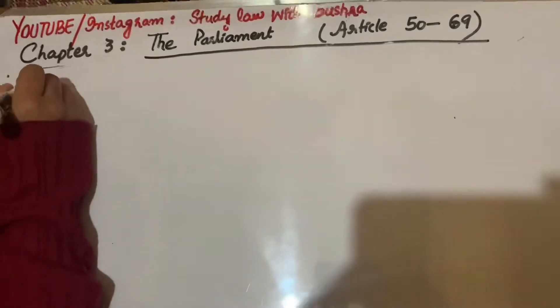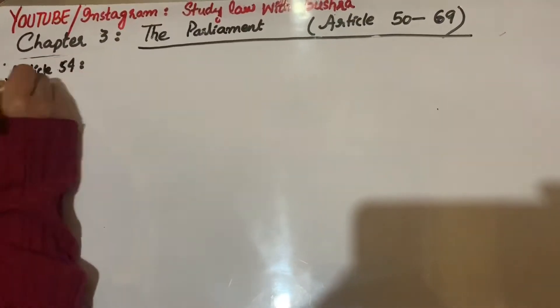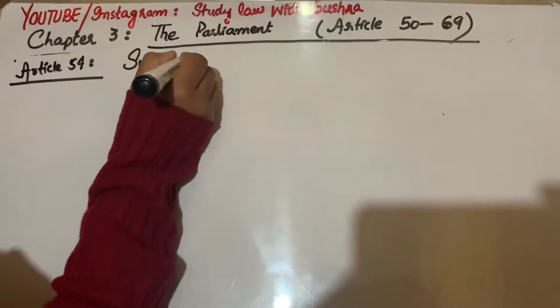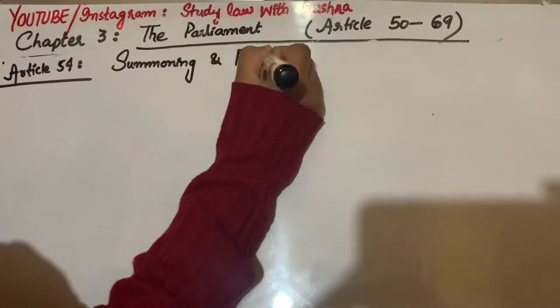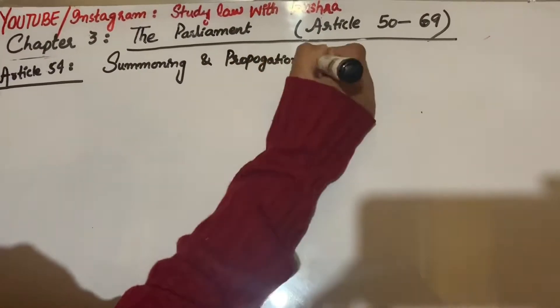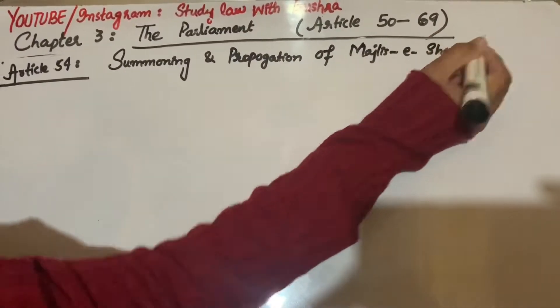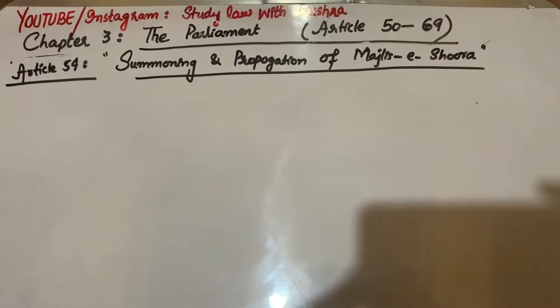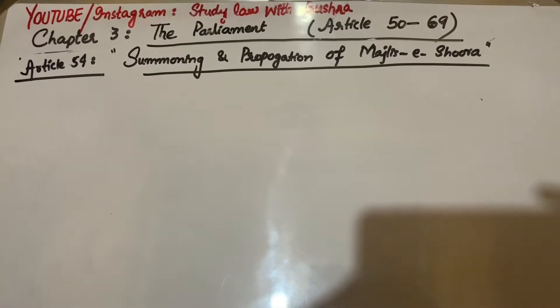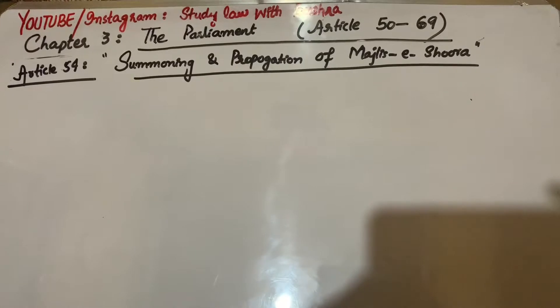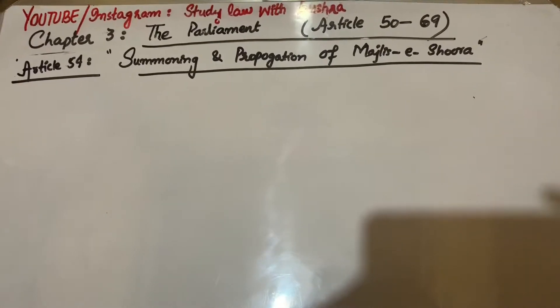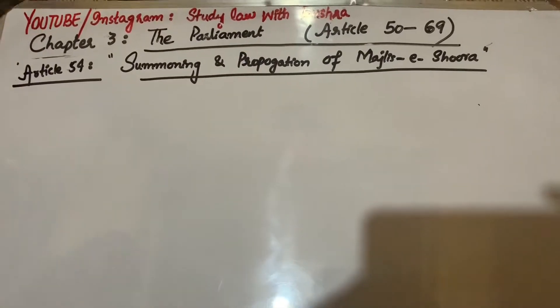Assalamualaikum viewers and welcome to my channel Study Law with Bushra. Today our topic of discussion is Article 54: Summoning and Prorogation of Majlis-e-Shura, the Parliament. But before starting, if you haven't subscribed to my channel yet, please subscribe and don't forget to press the bell icon for latest updates.